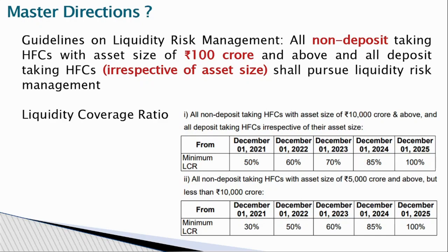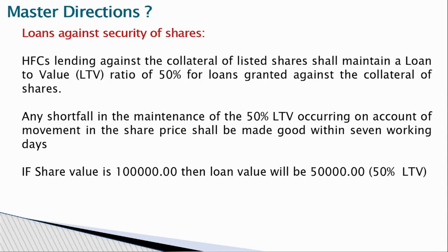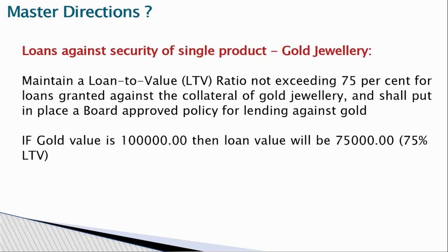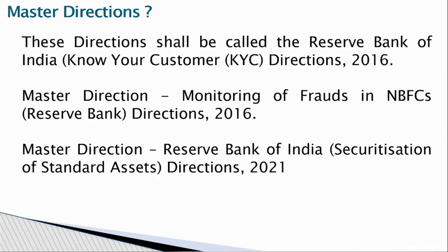As per master directions, if a housing finance company gives loans against shares, the LTV (Loan to Value) should be 50% — meaning if shares worth ₹1 lakh are taken as security, only ₹50,000 can be given as a loan. If gold is taken as security, the LTV is 75% — so for gold worth ₹1 lakh, a loan of ₹75,000 can be given. Housing finance companies must also follow KYC norms defined by RBI as per 2016 guidelines and monitor fraud as per RBI directions 2016, as well as Master Directions for Securitization 2021.